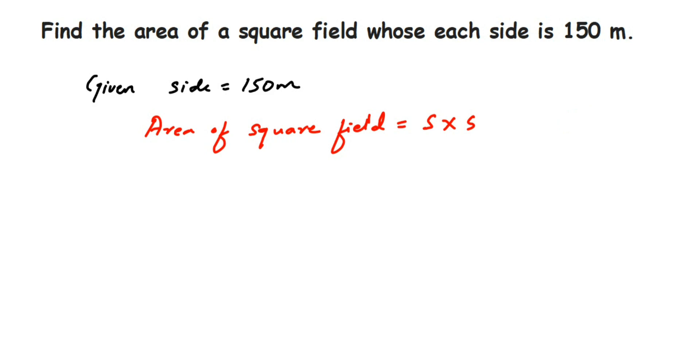Now, side is 150, so this is equal to 150 meters multiplied by 150 meters. You can multiply 150 and 150, which will be a huge multiplication process. Instead, what you can do is multiply 15 and 15.